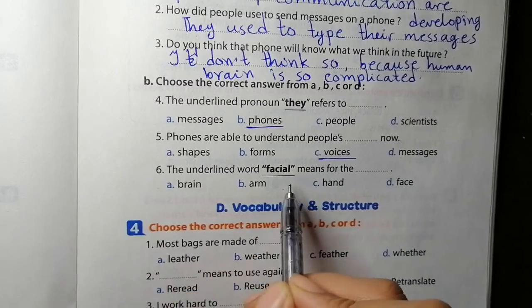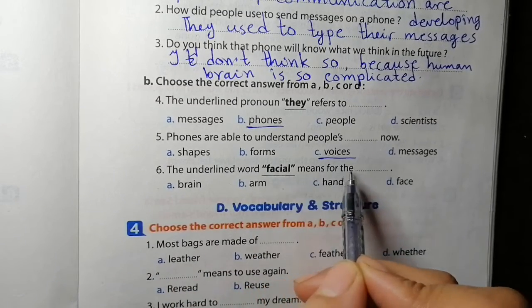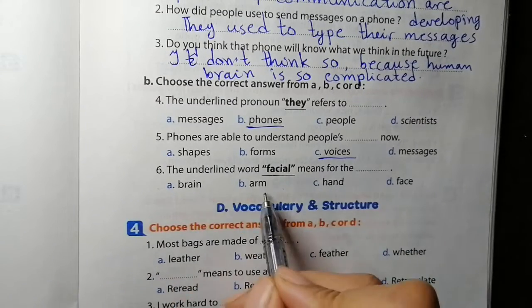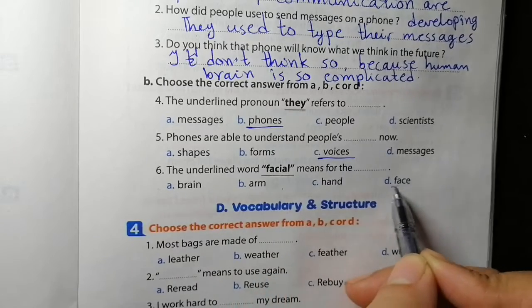The underlined word 'facial' means for the brain, arm, hand, or face? For the face.